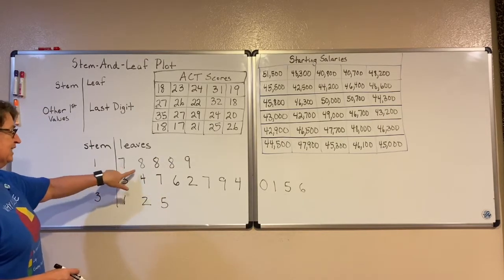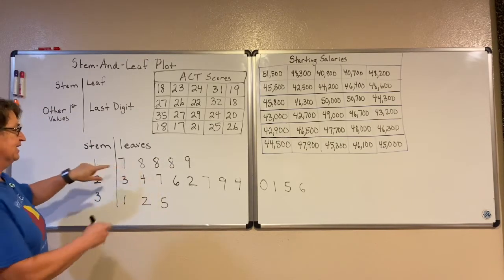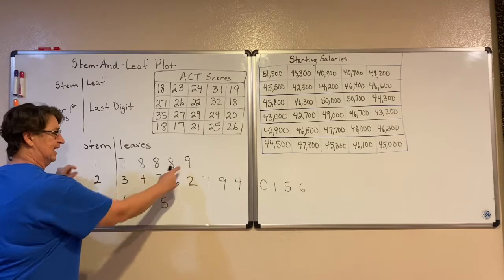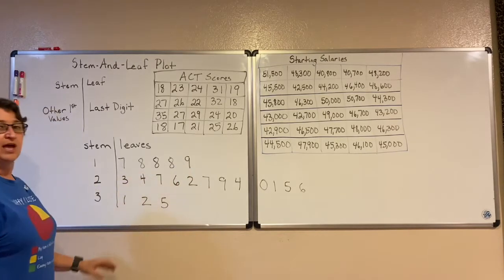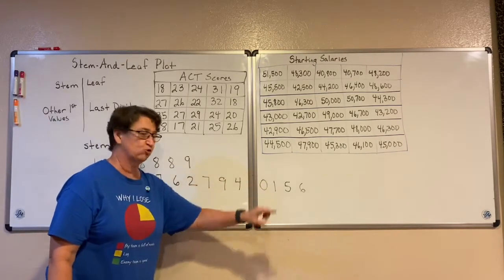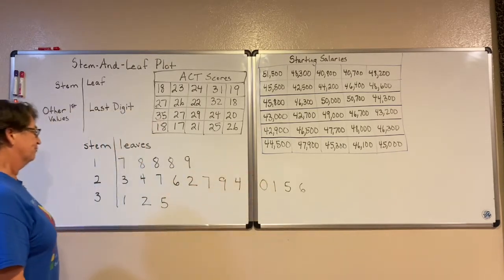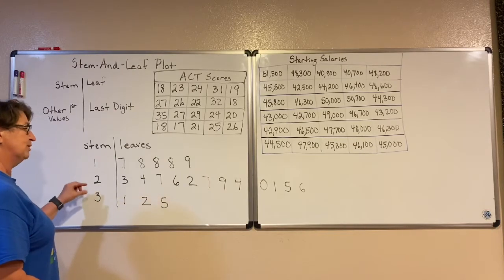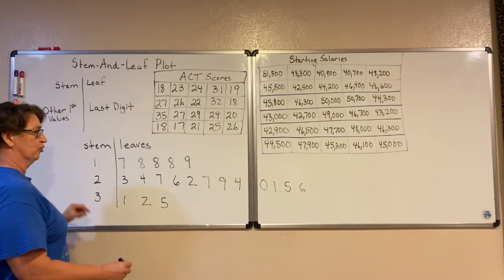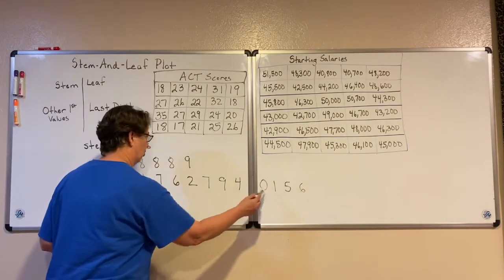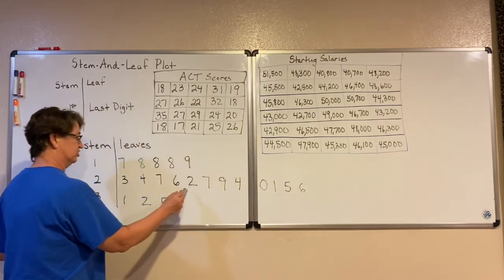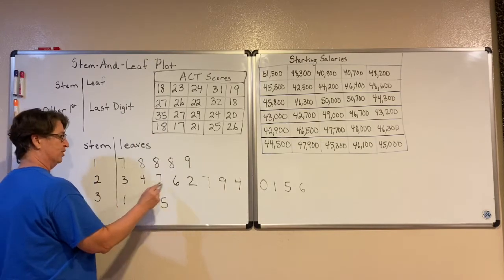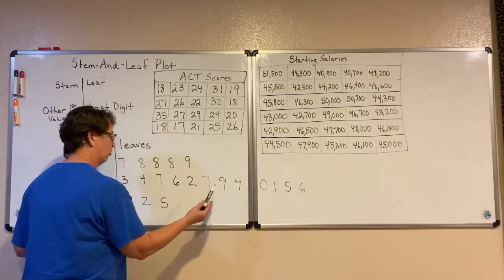So we have 17, 18, 18, 18, and 19. I'm going to do the same thing with my twenties — put them in the correct order. So I have a zero, a one, a two, a three, two fours.